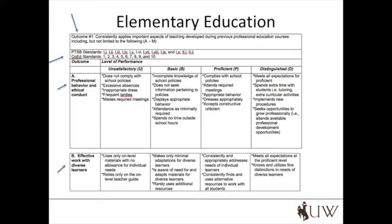This image shows a small portion of the paper version of the elementary education program rubric. The version in LiveText contains the same information but in an online format. The arrow at the top is pointing to the broad outcome, which is: consistently applies important aspects of teaching developed during previous professional education courses. The second arrow is pointing to the standards, showing the alignment. The third and fourth arrows are pointing to two subtopics: Professional Behavior and Ethical Conduct, as well as Effective Work with Diverse Learners. There are many other outcomes that will be evaluated; this sample shows just a couple of topics to get you started.